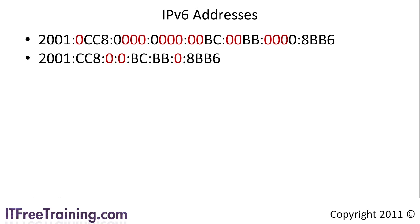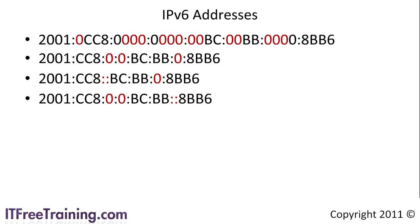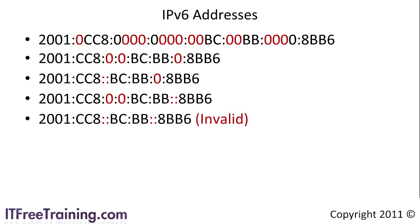IP version 6 can be reduced down even further. If you have multiple groups of 4 zeros together, they can be reduced down to a double colon. Notice the original 8 zeros in the address have been reduced down to a single double colon. However, the group of zeros at the end of the address cannot be reduced. You can only perform this step once per IP address. Reducing the first set of zeros makes the address shorter. If you were to reduce all zeros to double colons, the address would be invalid. Remember this when studying for your exam — it will help you remove a few wrong answers.